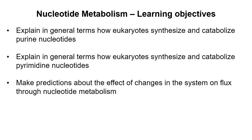This is the first in a series of four videos on nucleotide metabolism. In this topic, you should understand how eukaryotes synthesize and catabolize ribonucleotides and deoxyribonucleotides, but only in a general sense. You're not responsible for memorizing all intermediates in the pathways, but you should know key input molecules and intermediates as shown in these videos. I'll also touch on regulation, which should allow you to predict how the pathways will respond under different circumstances. In this first video, I'll describe the synthesis of purine ribonucleotides and how their synthesis is regulated.